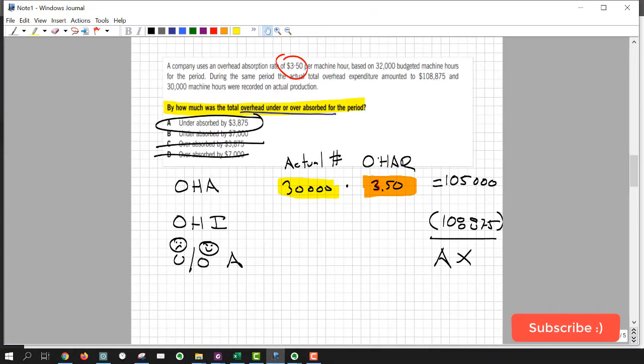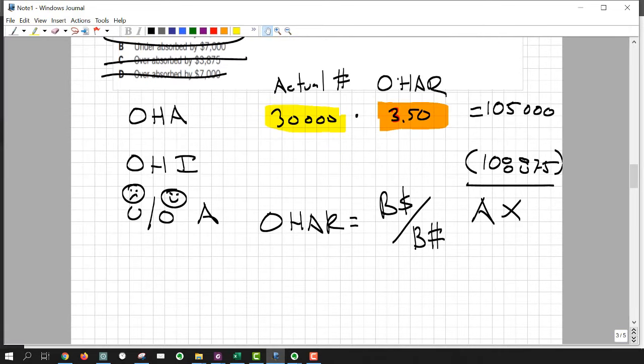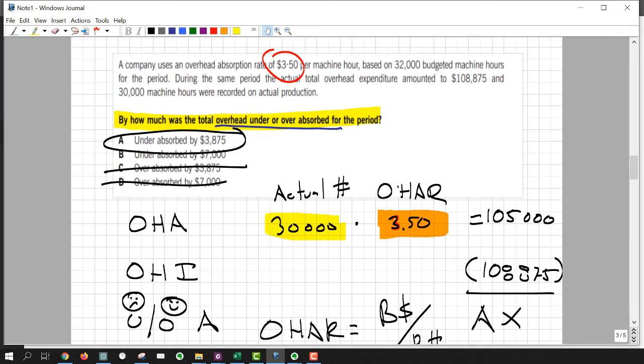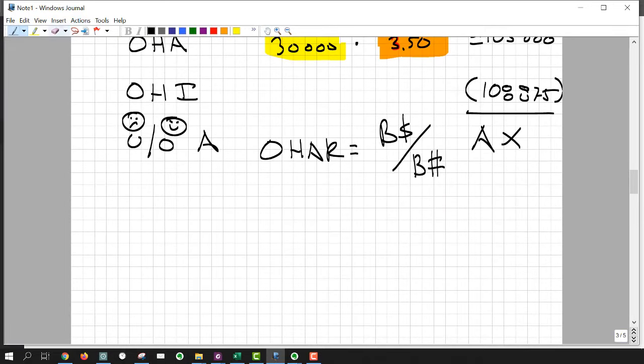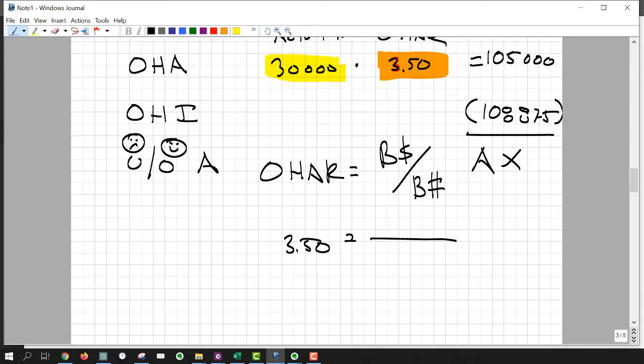So we have a bonus question for you. You ready for a bonus question? What were the budgeted overheads? Could we figure that out? Yes, we can. Another template that you need, overhead absorption rate. That's always the budgeted costs over some budgeted activity level. In this case, machine hours. So we know the overhead absorption rate, 3.5. We know budgeted hours of 32. Could we solve for x? Sure, we could. 32 times 3.5 equals 112. That's a little bonus question for you.